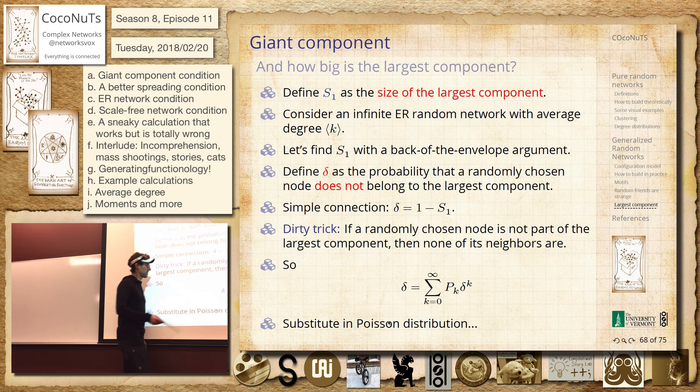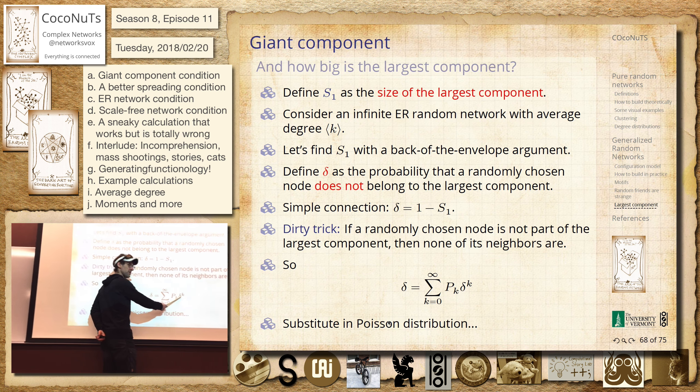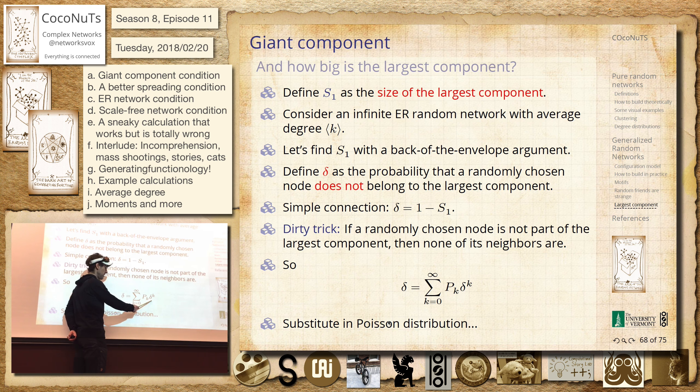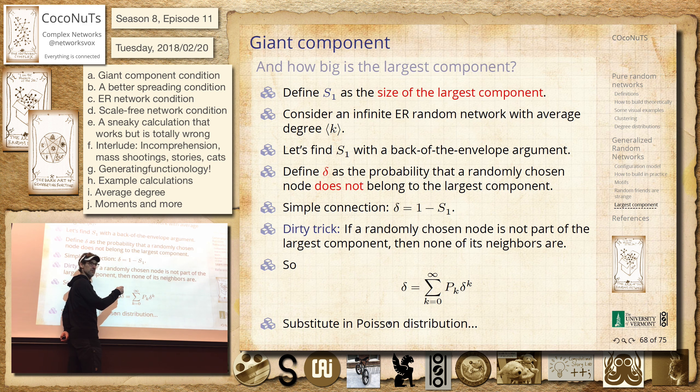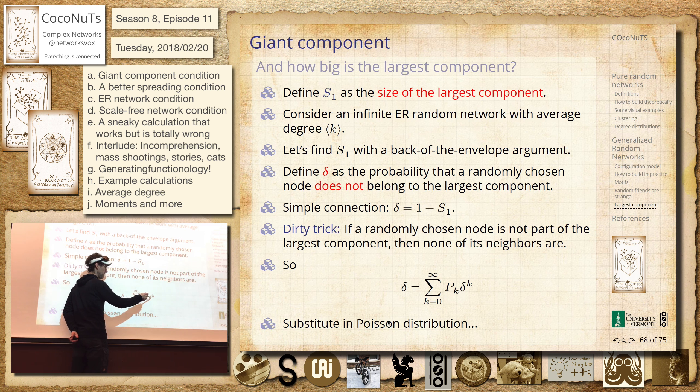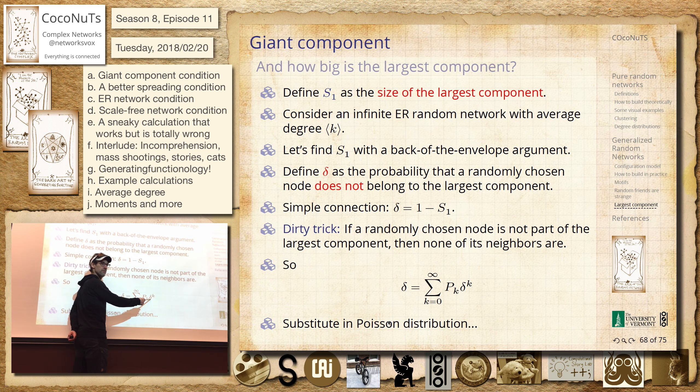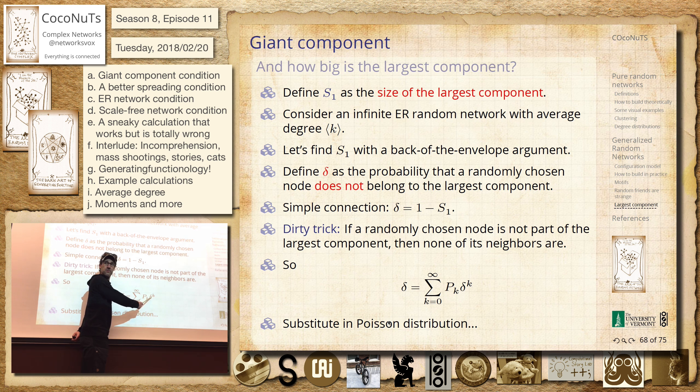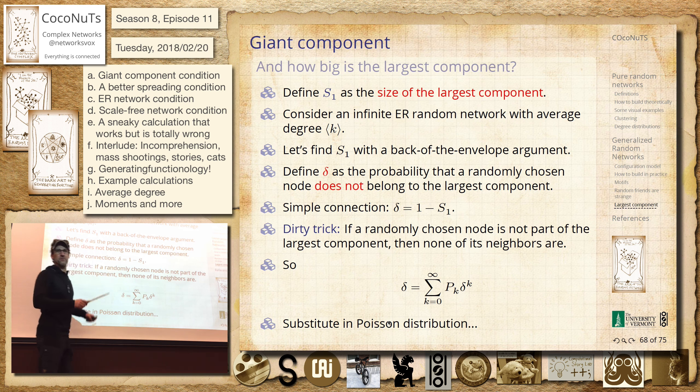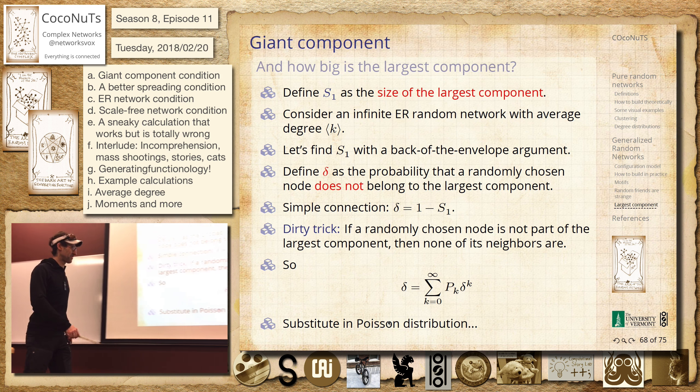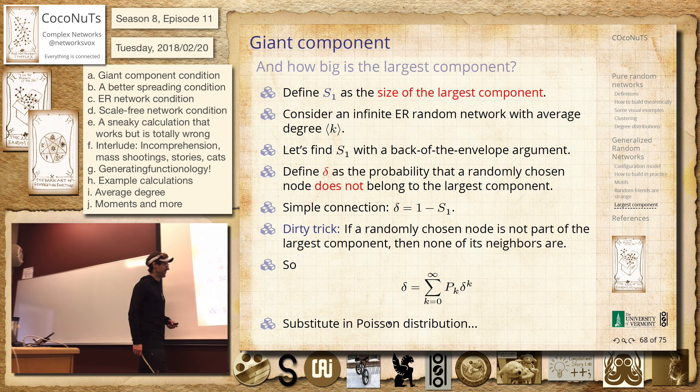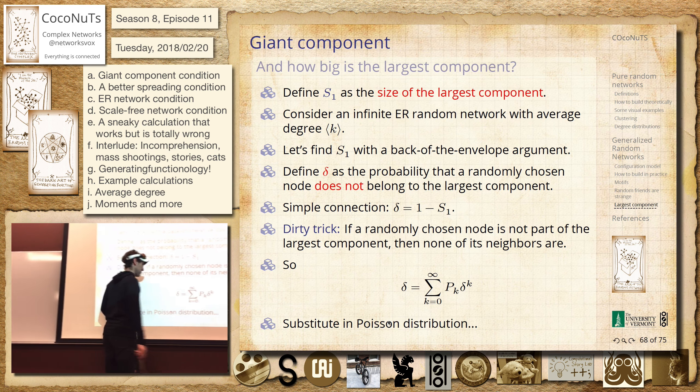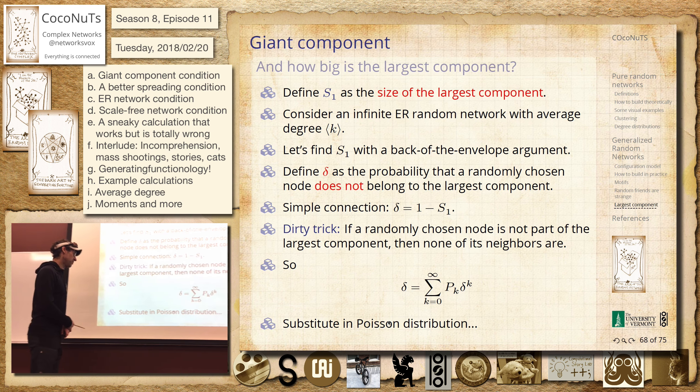You know, maybe they knew what they were doing, but the thing is, this is not, this can't be the same delta, right? This is the probability that we choose a node. And this is the probability that we choose a node by its edge. So your friends are strange. So this is not acknowledging that your friends are strange. But it all feels good while you're doing it.